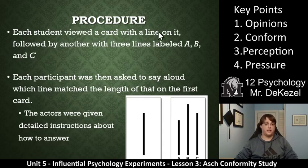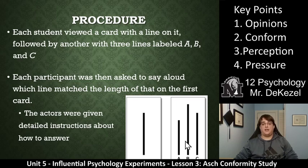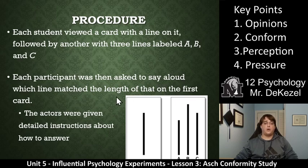Maybe you've seen this before, maybe you haven't, but it was kind of just like a card with a line, and they would be asked to match it to one of these three lines — which line does this match, essentially. Each student viewed a card with a line on it, followed by another card with three lines labeled A, B, and C. Something just like this here — line A, B, and C. And then each participant was asked to say aloud which line matched the length of that on the first card.